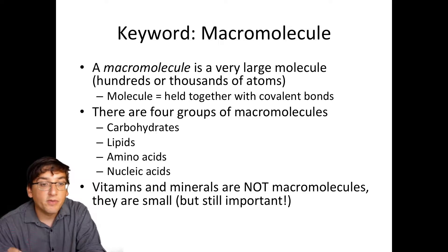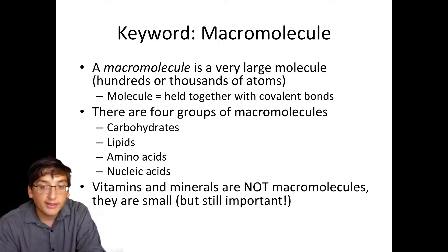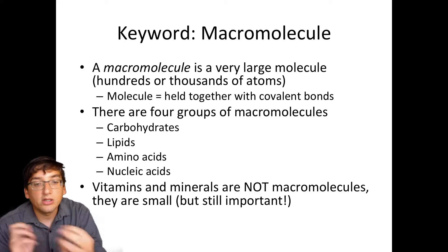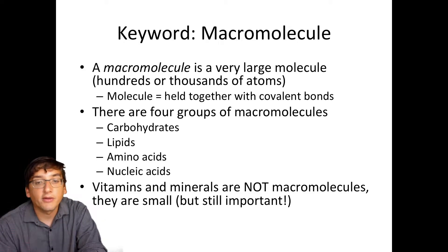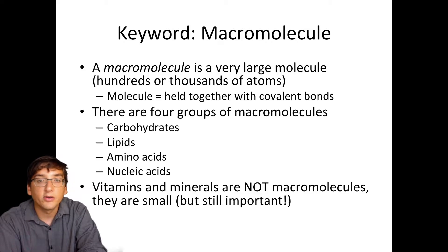The four groups of macromolecules — carbohydrates, lipids, amino acids, and nucleic acids — are all super important for our living and for cell function. Vitamins and minerals are also important but they are not macromolecules — they're small. Macromolecules are usually thousands or even millions of atoms in long chains held together with covalent bonds, some with polar covalent bonds and some with non-polar covalent bonds.